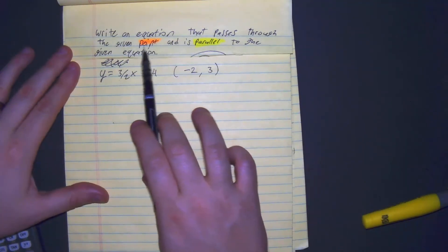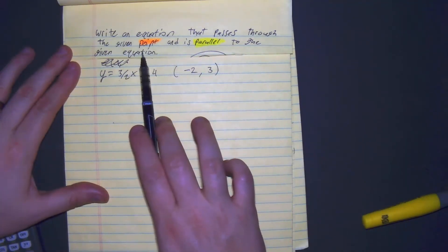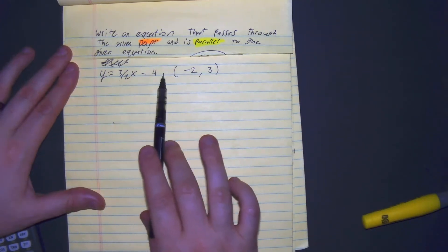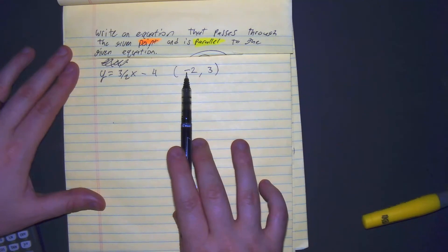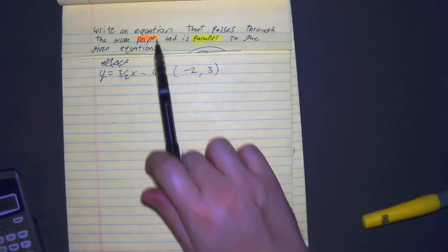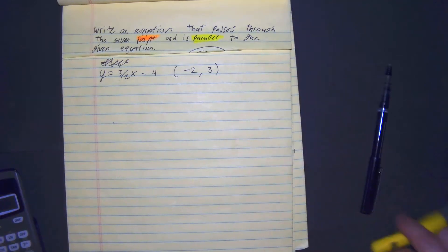Write an equation that passes through the given point and is parallel to the given equation. We're given an equation of y equals 3 halves x minus 4, and we're given a point of negative 2, 3. I have this highlighted from the previous problem because I didn't want to rewrite it.